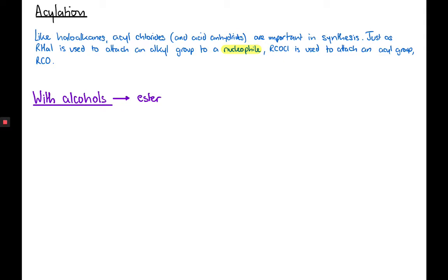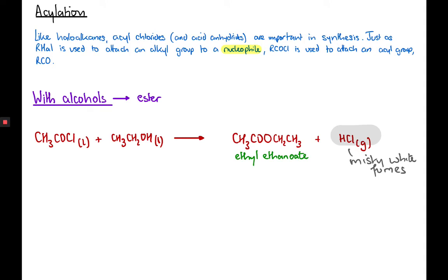If we react acyl chlorides or acid anhydrides with alcohols, we can use them to make esters. One difference from using carboxylic acid is that we get the reaction going to completion — there's no equilibrium here. The ester produced would be the same; for example, using ethanoyl chloride we'd still make ethyl ethanoate. This is a condensation reaction involving the removal of a small molecule. In this case the small molecule being removed is hydrogen chloride, and just as with the hydrolysis reaction, we would get misty white fumes. This is a common feature of acyl chlorides and evidence that an acyl chloride was used.